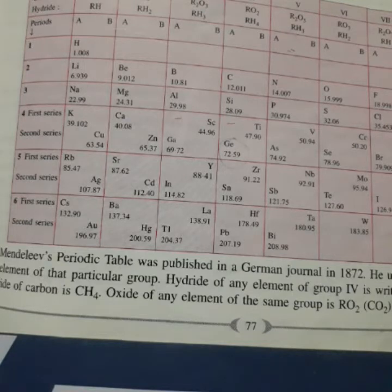And then, what we will study? How he arranged the elements? He arranged elements in increasing order of atomic mass in the form of a table called the periodic table.